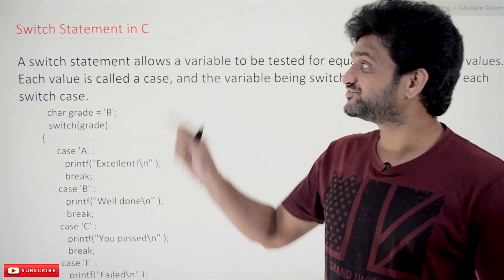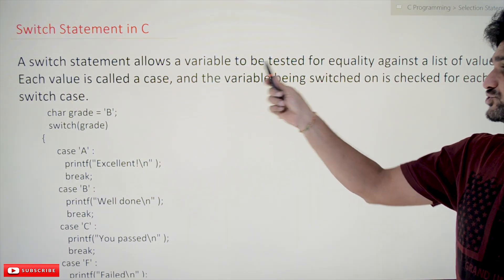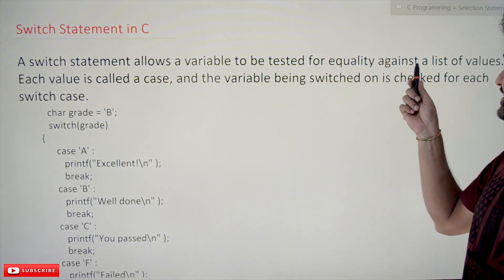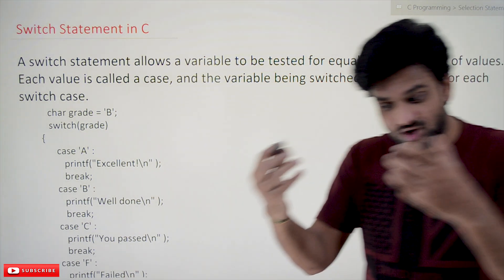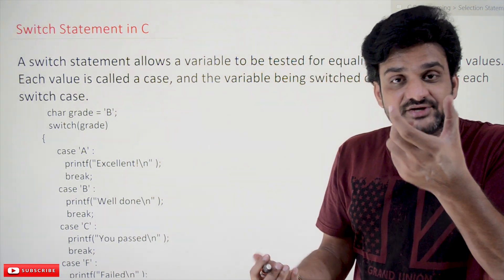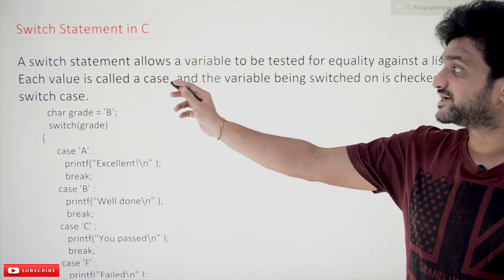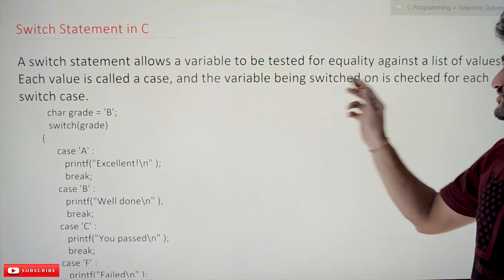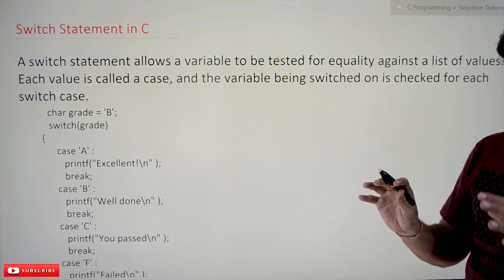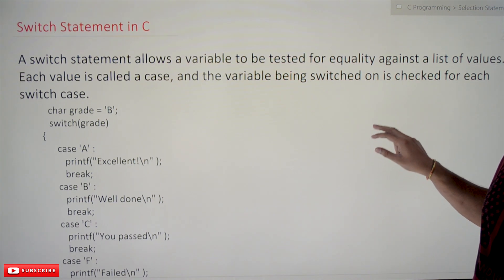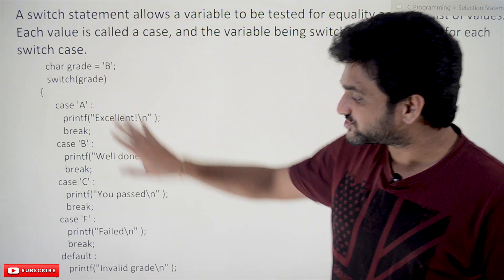Now, coming to this class, we'll try to understand the switch statement. A switch statement allows a variable to be tested for equality against a list of values. A variable's value will be tested against a list of values — each value is called a case, and the variable being switched on is checked for each switch case.